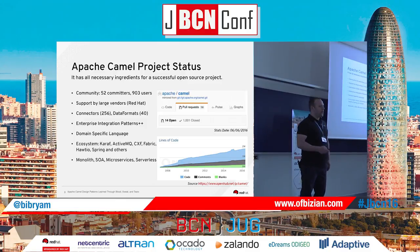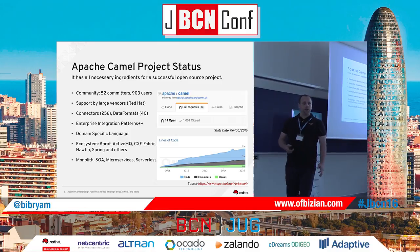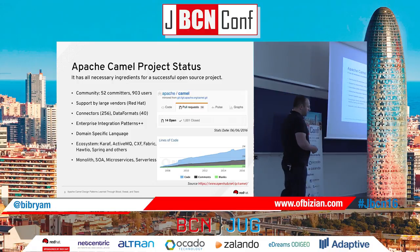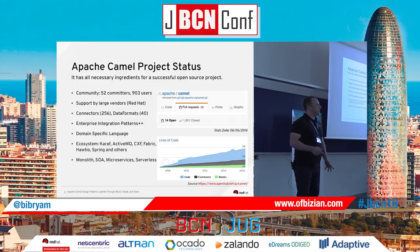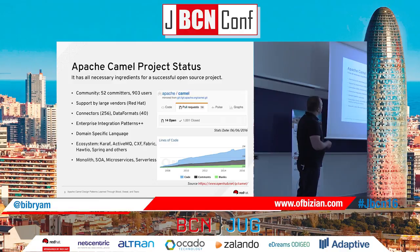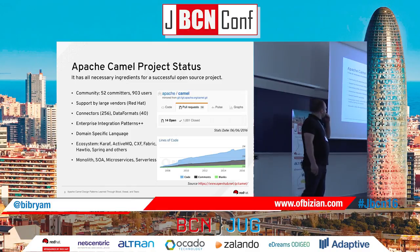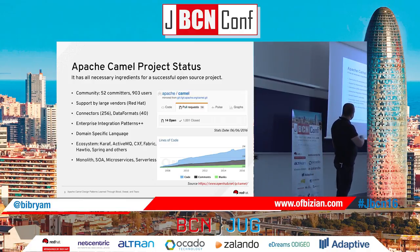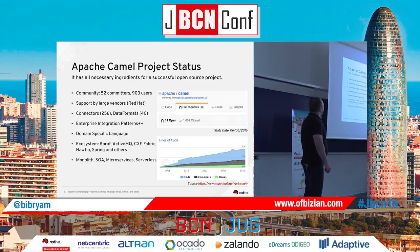I want to give you a little update on the project status. These are statistics from the last quarter. At the moment Camel has 52 connectors, more than 900 users on the user list, exchanging around 1,700 emails per quarter. It's quite an active community. A week ago we had our thousandth pull request on GitHub — pull requests from non-Camel committers. The code base has been increasing steadily from 2007 when the project was created.